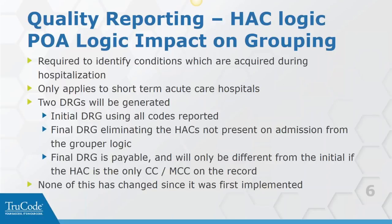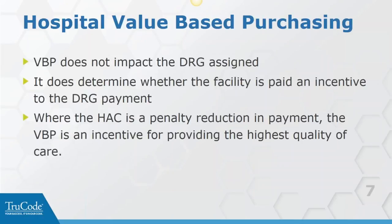The final DRG is the payable DRG. The only time the initial DRG differs from the final DRG is if that HAC - which is always a comorbid condition or major comorbid condition - is your only CC or MCC on the encounter. In most cases, people who acquire problems after being admitted are already pretty sick with a lot of other conditions. It's something like 0.01% of the total Medicare population that have really had their DRGs impacted by hospital-acquired conditions and POA. This process has not changed since it was implemented back when we were still using ICD-9.